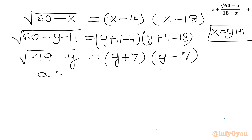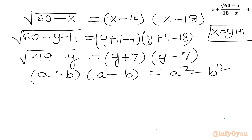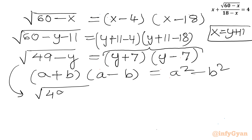Now I can apply the algebra identity: (a plus b)(a minus b) equals a squared minus b squared. Applying this here, square root (49 minus y) equals y squared minus 7 squared, which is y squared minus 49.